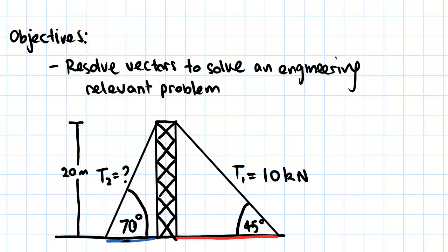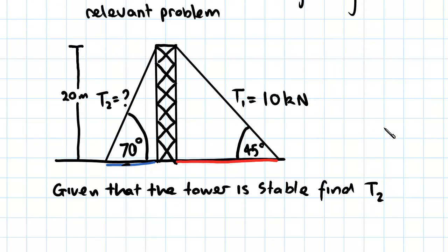The problem we have here is we have some kind of tower being supported by two cables. This cable here is exerting a force of 10 kilonewtons at an angle of 45 degrees to the ground. This cable here makes an angle of 70 degrees to the ground and we're trying to find the force it exerts.